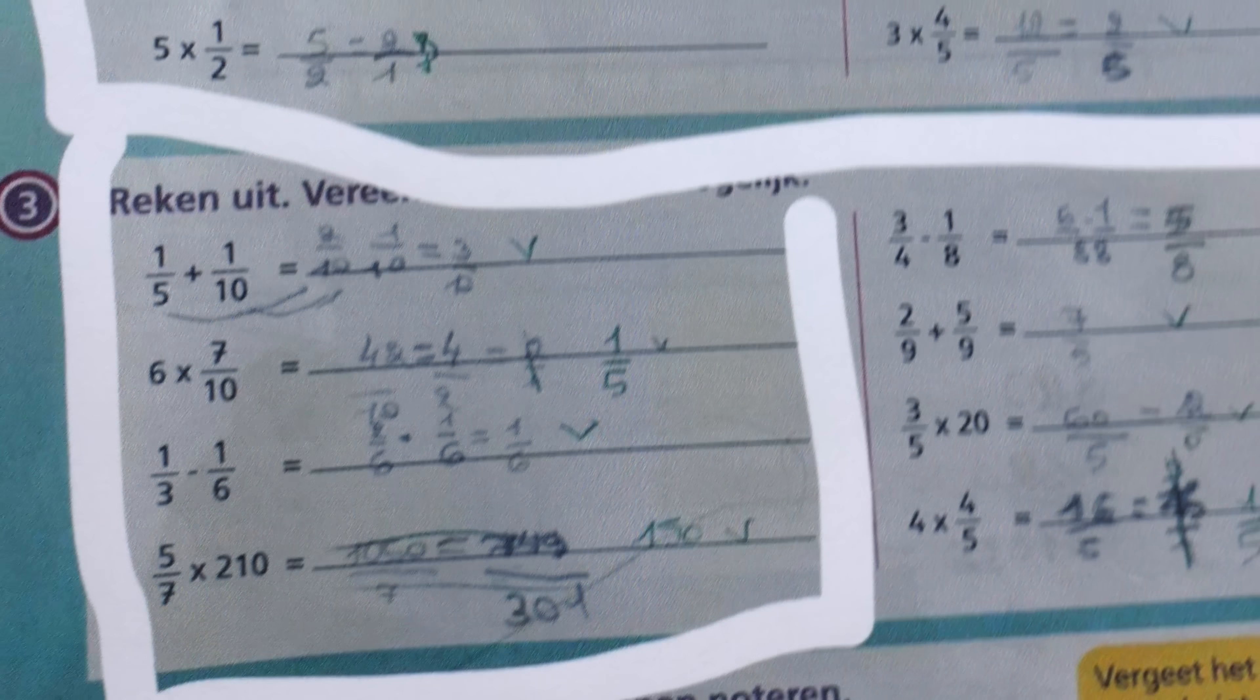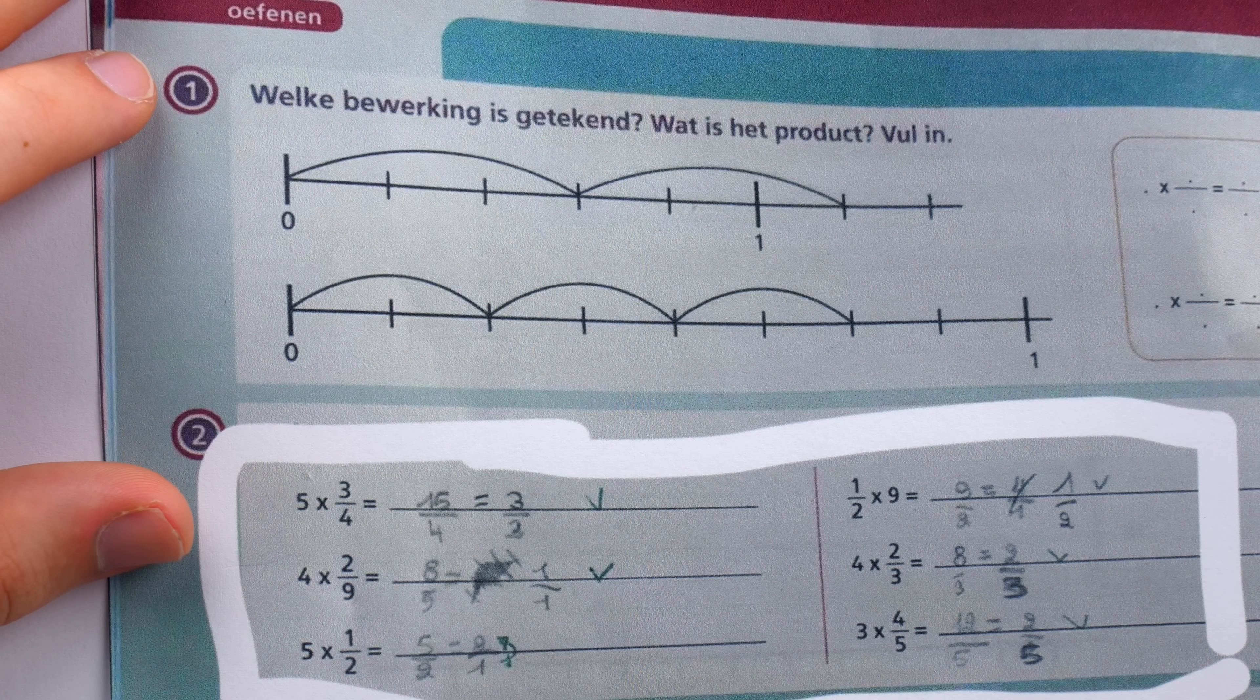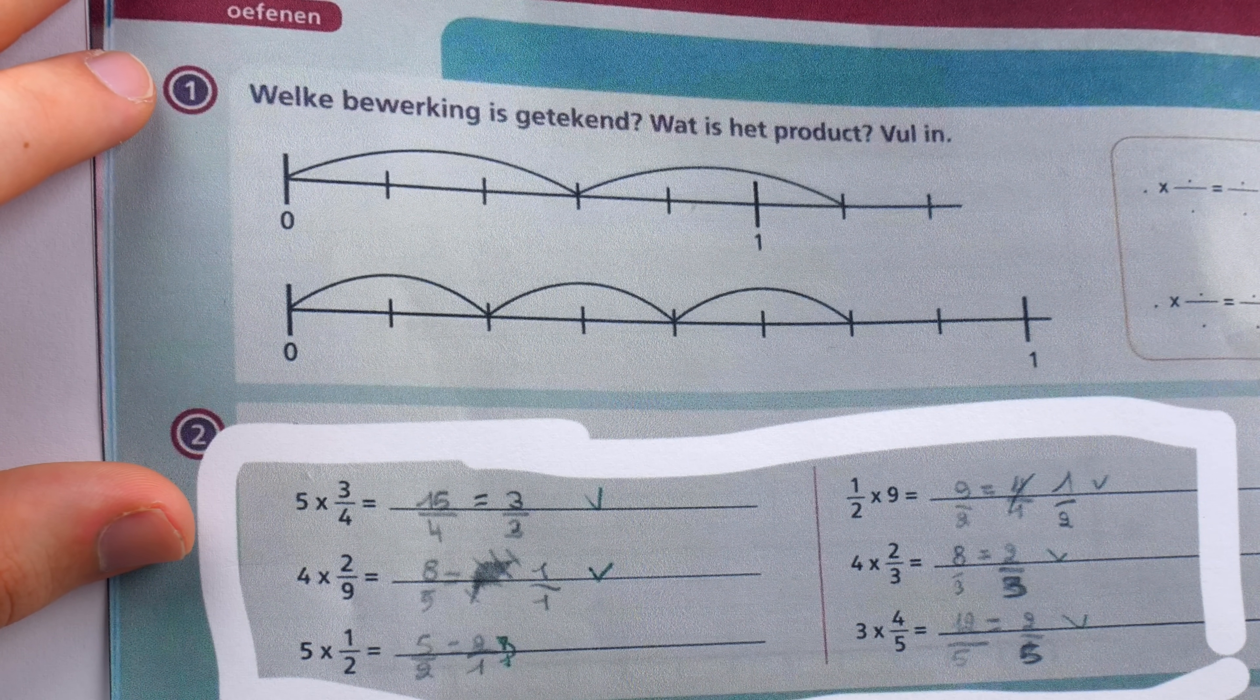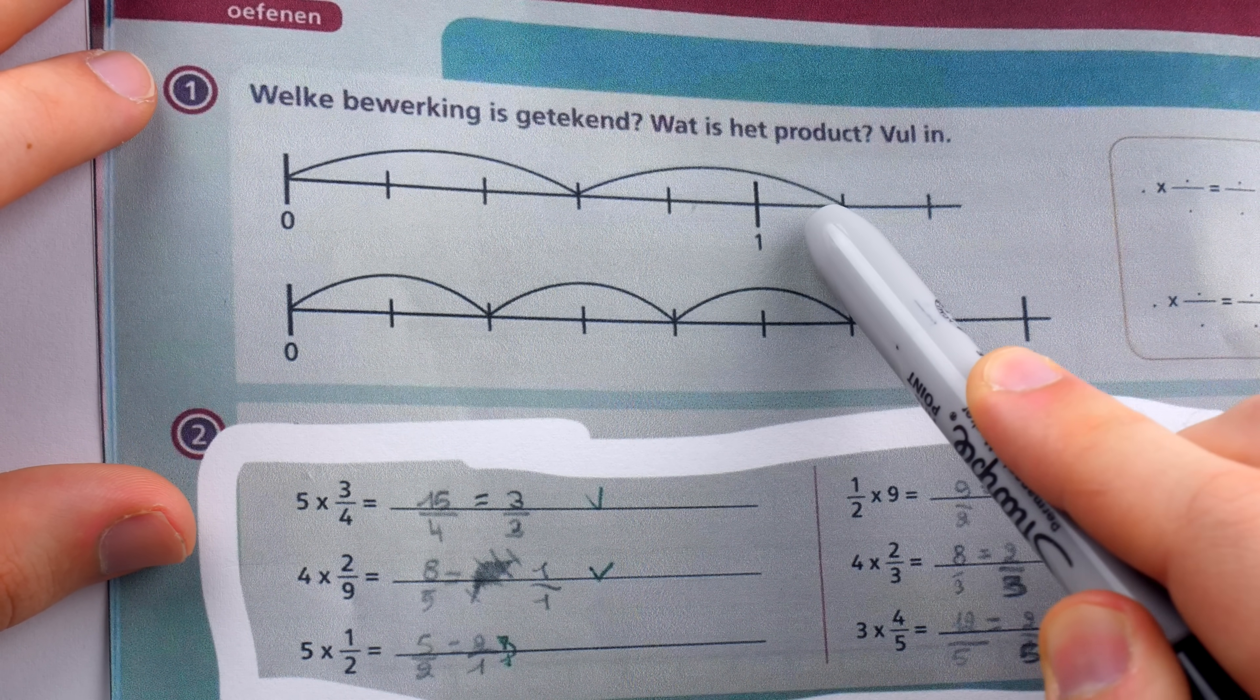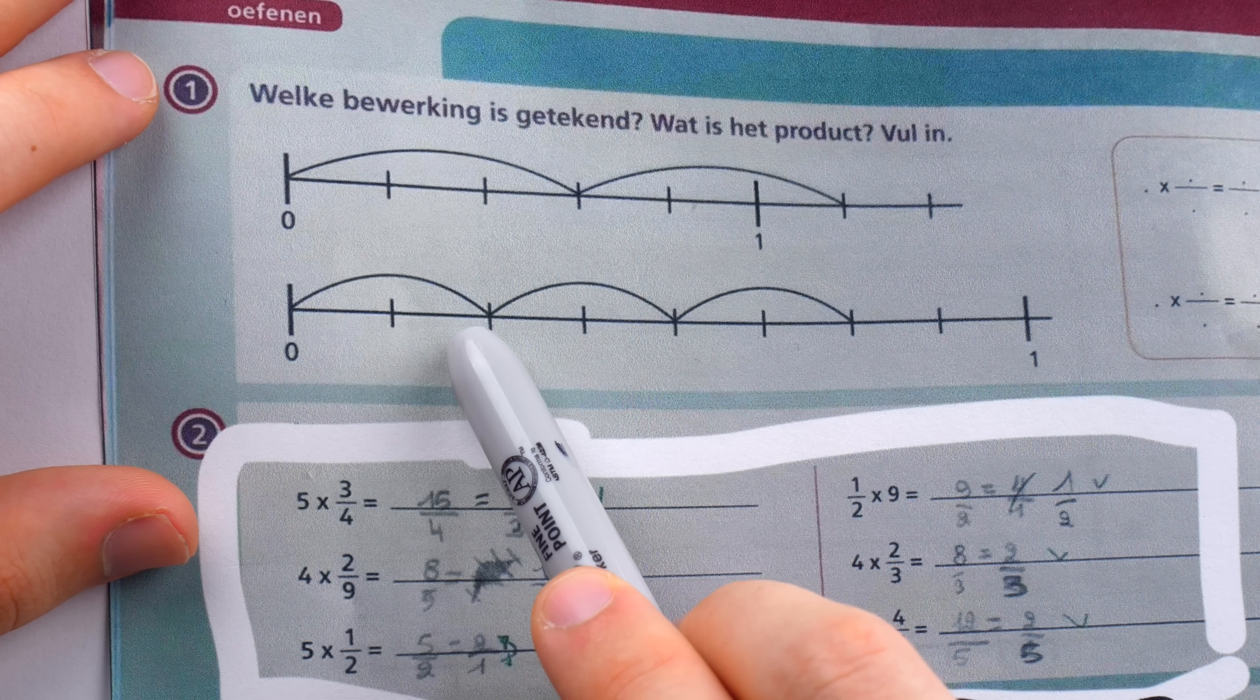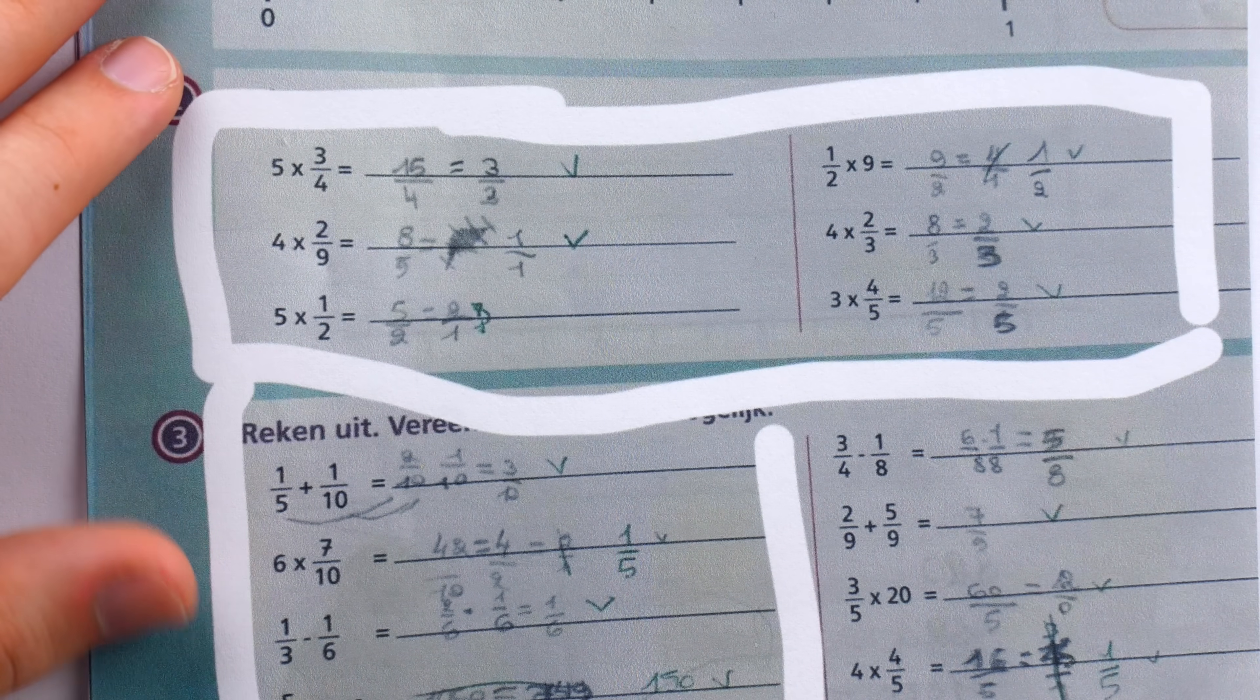Let's take a look and you can tell me what you think. By the way, the first problem, just for the sake of completeness, is asking what operation is shown and what is the result. It looks like the first operation is 3 fifths plus 3 fifths, which is 6 fifths. And the second diagram shows 2 eighths times 3. With that settled, let's move into the weird stuff.